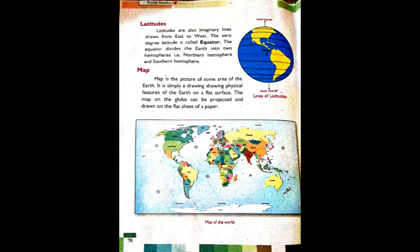Next is the map. A map is the picture of some area of the earth. It is simply a drawing showing physical features of the earth on a flat surface. The map on the globe can be projected and drawn on a flat sheet of paper. A globe is a round, ball-shaped model, but a map is when you draw the earth on any flat surface - it is a drawing showing earth's physical features.